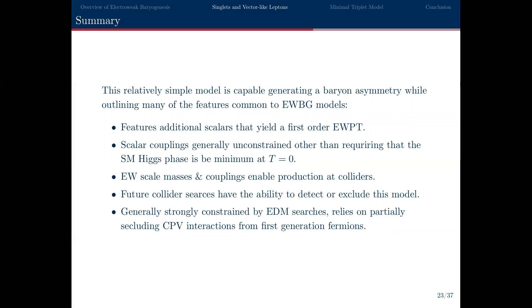In summary, this is a simple model that can both generate the observed baryon asymmetry and avoid current EDM and collider constraints. It features many of the standard phenomenology considerations needed when looking at baryogenesis models. While the model only used 36 fb^{-1} of data, including analyses with 139 fb^{-1} might exclude it, but it remains an appealing toy model for studying transport equations and how to solve for the baryon asymmetry around the bubble wall.